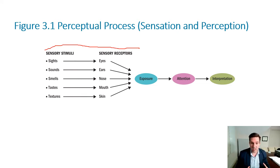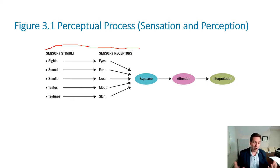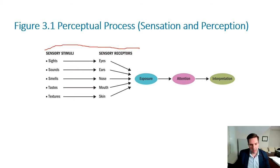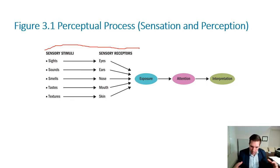After sensation happens, we start organizing this information in a way that makes it meaningful or useful for us when we have a goal. The perceptual process works as follows: information comes through your senses giving you exposure, then you decide whether to pay attention to it or not. Hopefully right now you're paying attention to this lecture rather than your roommate's music. Finally, you interpret or organize the incoming information in a way that helps you achieve your goal — we call that interpretation.